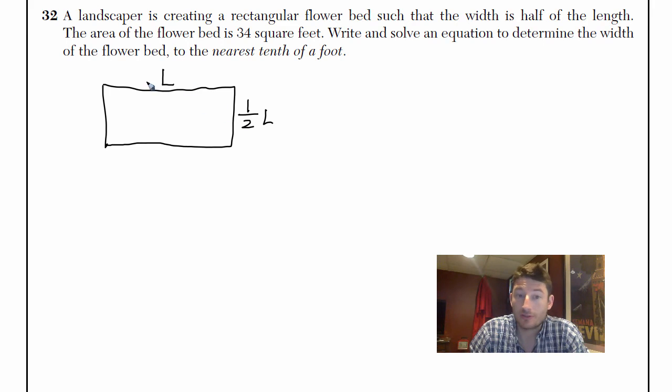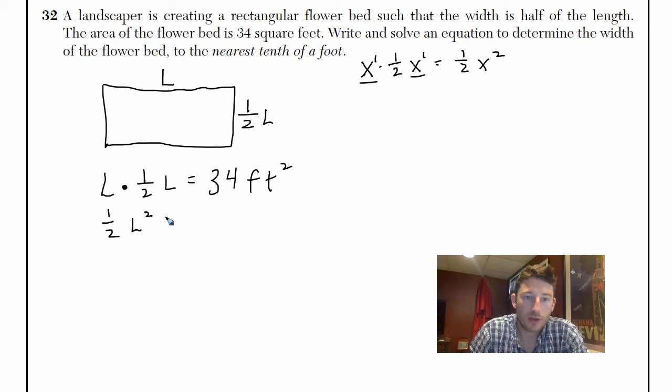So when I get my area of a rectangle, which is just length times width, L times 1/2 L, it's going to be 34 square feet, 34 feet squared. So L times L, if it's weirder to you just picture x times 1/2 x, what does that give you? Hopefully you said 1/2 x squared, right. Same bases, add the exponents. So this is going to be 1/2 L squared equals 34 feet squared.